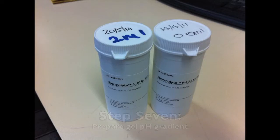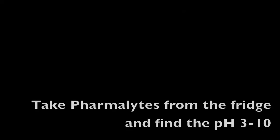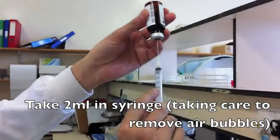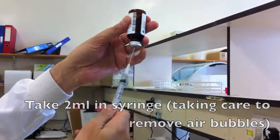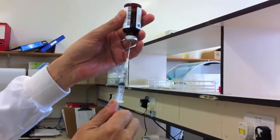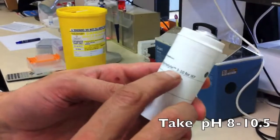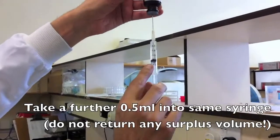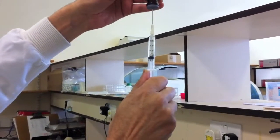The next step involves creating a pH gradient within the gel. Take the pharmalytes from the fridge and notice that they both have separate pHs and volumes written on their lids. Use the syringe to take two mils of the pH 3 to 10, ensuring there are no air bubbles. In the same syringe, carefully take a further 0.5 mils of the pH 8 to 10.5. It is very important that you do not return any surplus volume into the solution.